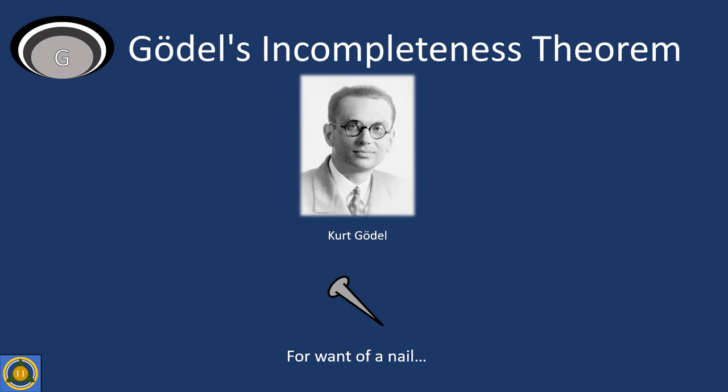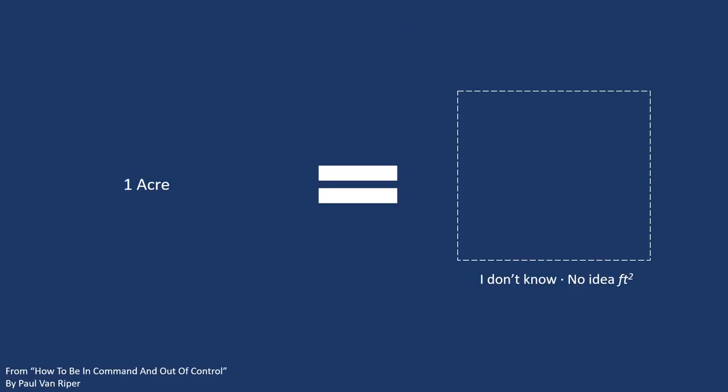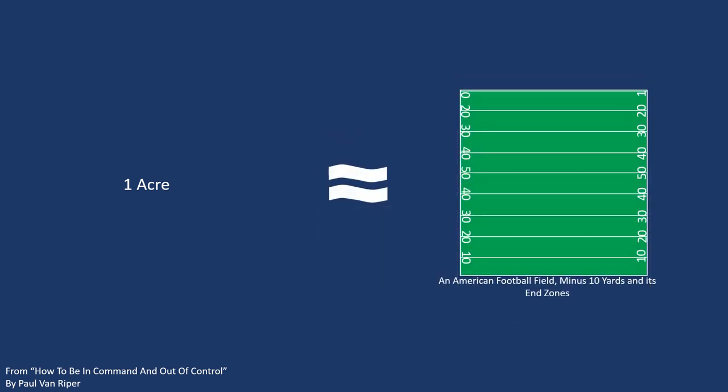His interest in provability led him to the conclusion that a mathematical system, such as arithmetic, cannot be used to prove its own validity. Taken to the abstract, this idea means we need outside context to comprehend things. Or, said another way, retired Marine Corps General Paul Van Riper once stated, there is no learning without context.